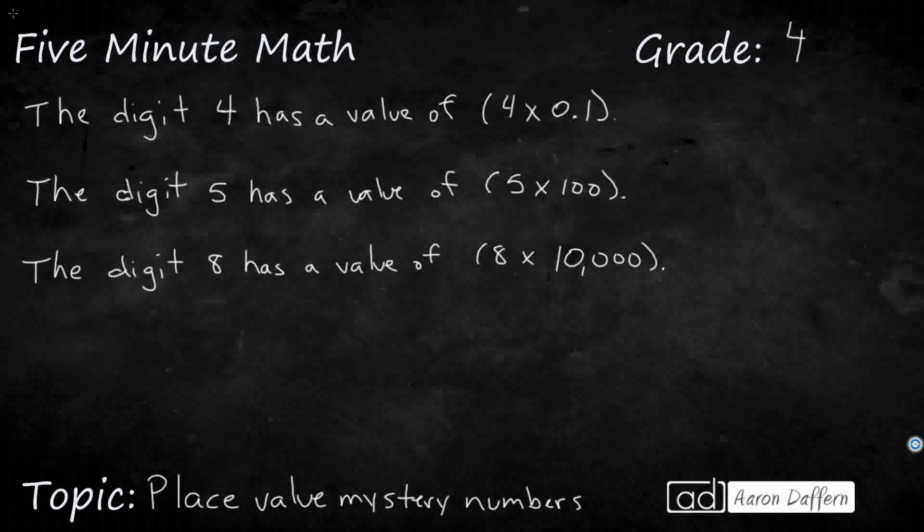So I have a series of 3 clues on the screen here, and this actually has more than one possible answer. So let's look at our clues. The digit 4 has a value of, and they're going to give it to us in expanded notation. So let's take a look at our place value. We see that something goes to the 10ths place. We have one that goes to the 100ths place, and one that goes to the 10,000ths place.